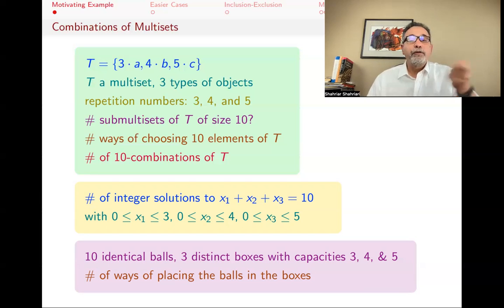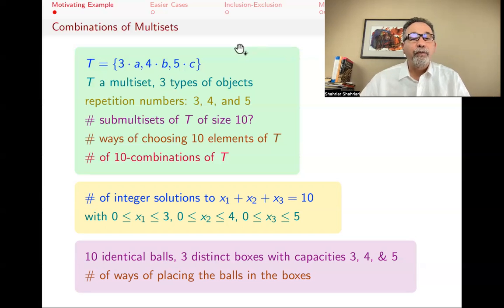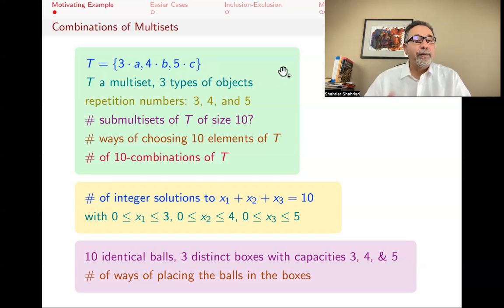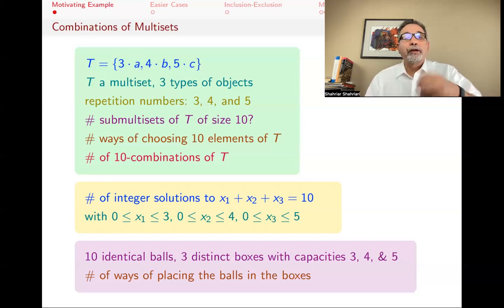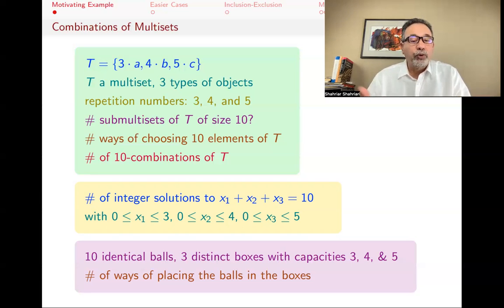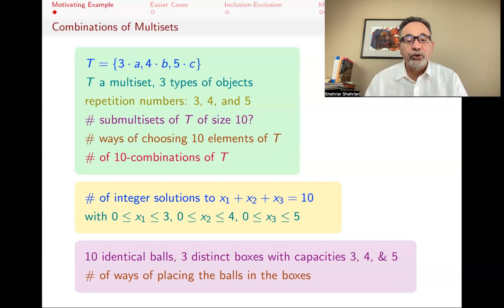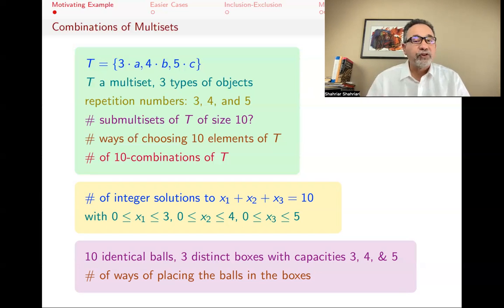If you put a ball in the second box, that means you're picking one of the B elements. Because the capacity of that box is 4, you're never going to pick more than 4. You have 10 balls — that's what you want to choose. These are different versions of exactly the same problem, and that's what we want to solve in this video.